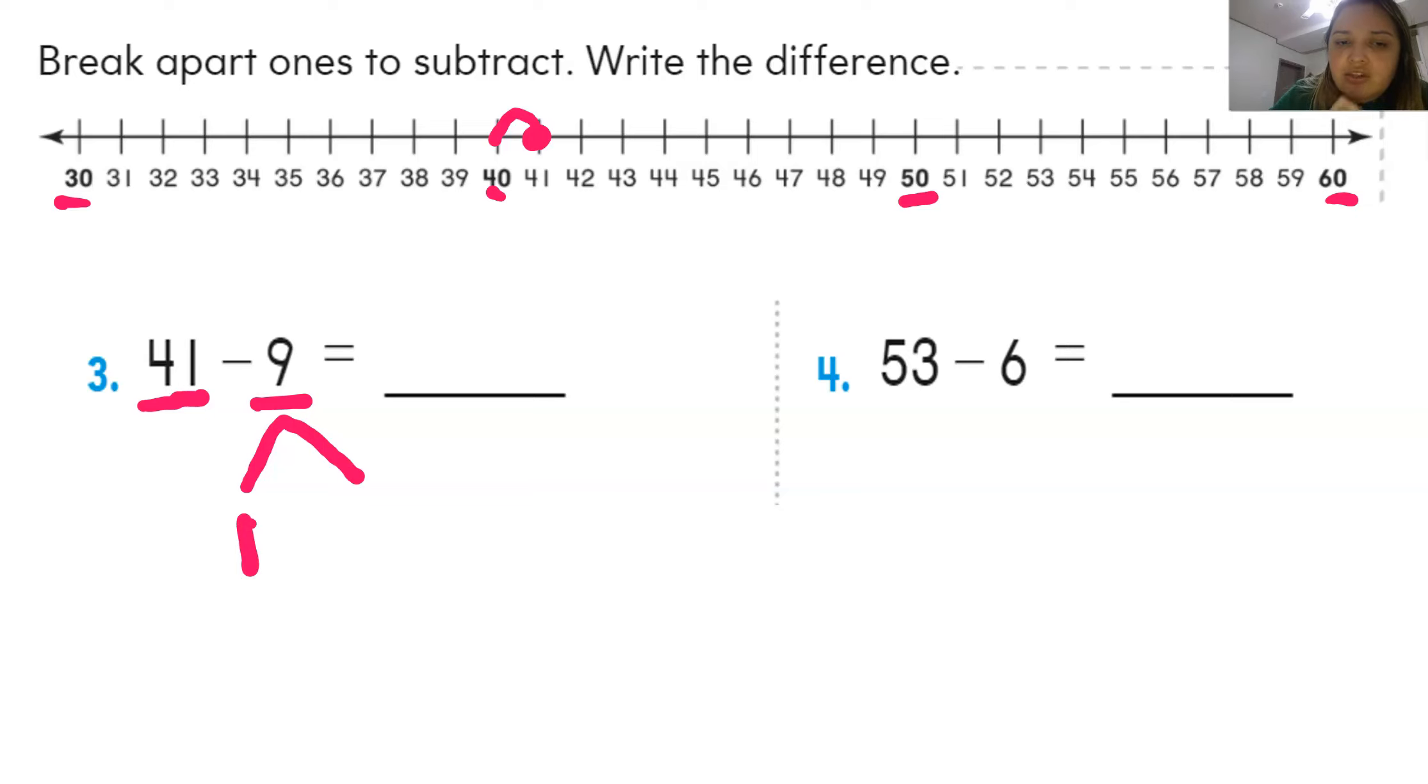So 1 plus what number is equal 9? How can we break up the 9? 1 and 8. Right? Because 8 plus 1 equals 9. So we already subtracted 1. So now that means we need to subtract 8 more. Here we go. 1, 2, 3, 4, 5, 6, 7, 8. So my answer is 32. Woohoo!